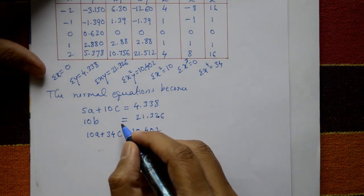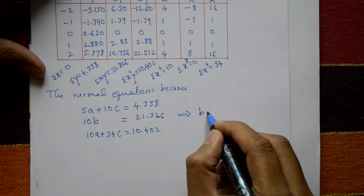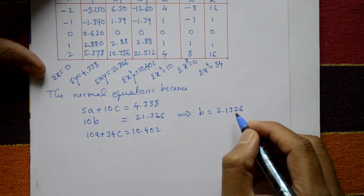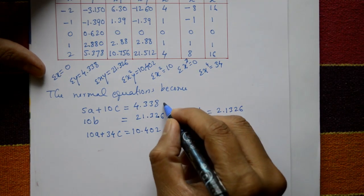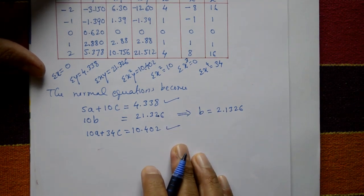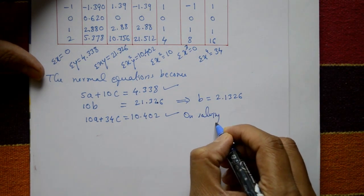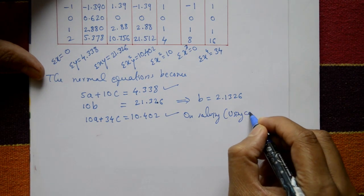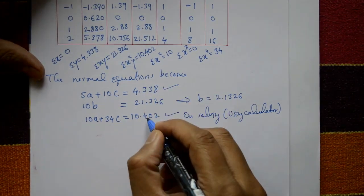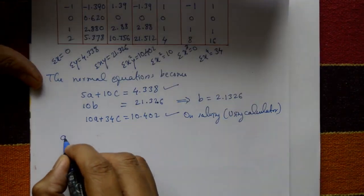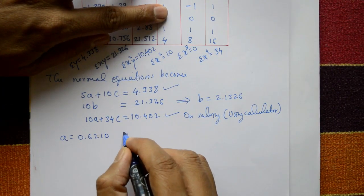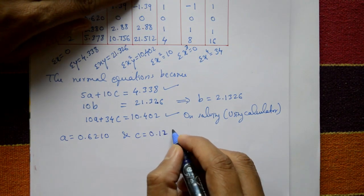From the second equation, b is directly obtained: b = 2.1326. Solving the first and third equations simultaneously using a calculator, we get a = 0.6210 and c = 0.1233.